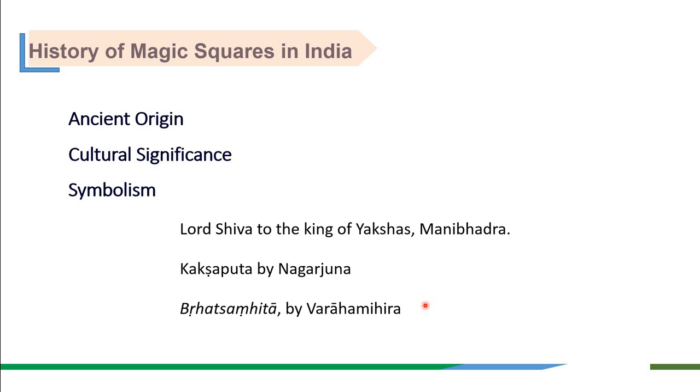In India, magic squares held symbolic and spiritual meanings with connections to numerology, astrology, and cosmic order. About the origin of the magic squares, legend says that magic squares were first taught by Lord Shiva to the king of Yakshas, Mani Bhadra.